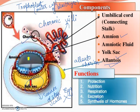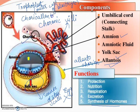Kuch functions - protection, nutrition, respiration, excretion, synthesis - yeh sara jo hamare fetus ki membranes hain, in ka function hai. Aur jo yolk sac hota hai, human beings mein bohot small hoga, gradually degenerate hota rehta hai, shrink hota rehta hai. Chorion aur jo allantoin hai woh placenta ka formation karega - chorioallantoic placenta.